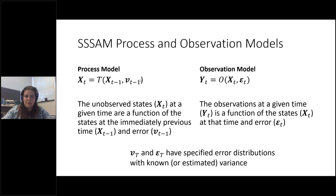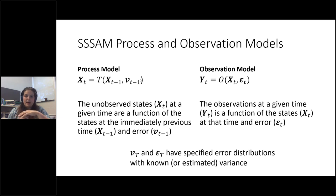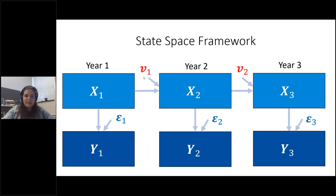The process model states that the value at a given time in your unobserved state — something like abundance or mortality — is a function of the state immediately previous in the time series plus some amount of error. The observation model — your catch data, composition data, and indices — is a function of just the state at a given time plus its own source of error. These two error terms, Vt and epsilon t, have specified pre-described error distributions.